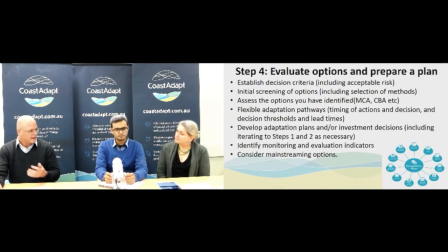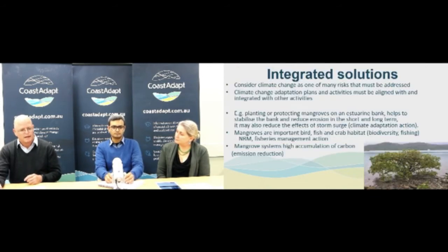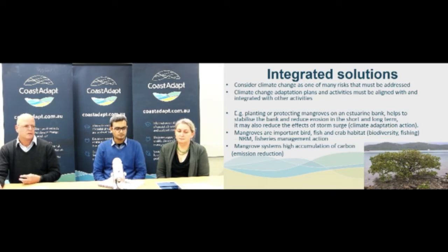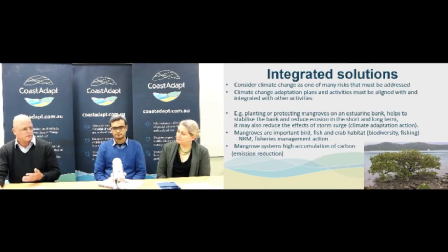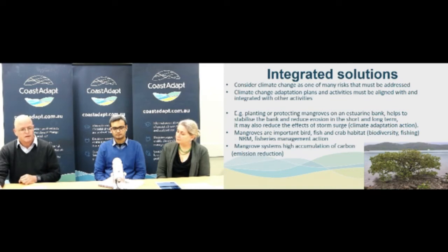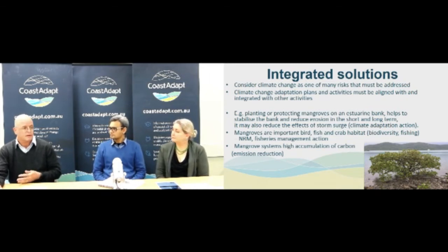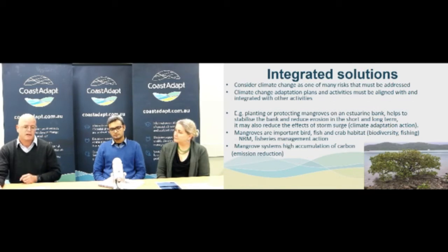There's a lot of detail about adaptation planning we haven't got time to go into now. It's important to think about integrated solutions — those that can give multiple benefits. For example, if you have storm surge challenges, you might plant mangroves, because mangroves can dampen storm surge and provide natural benefits without having to build a wall. Mangroves are important bird, fish, and crab habitat, so they're important for biodiversity, and there might be an NRM plan or fisheries management action that develops from this particular adaptation option.